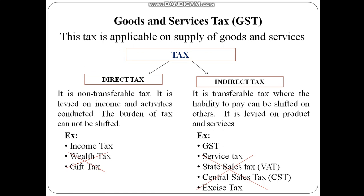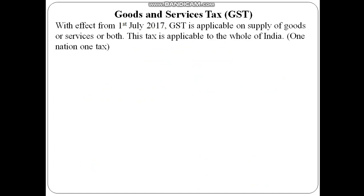It means one nation, one tax. Earlier we had a very complicated, very complex tax policy — for different activities we had to pay different taxes levied by different governments in India. In order to simplify this complexity, the Government of India introduced GST: one nation, one tax. It is applicable from 1st July 2017 and is applicable on the supply of goods or services or both. This word 'supply' is very important.